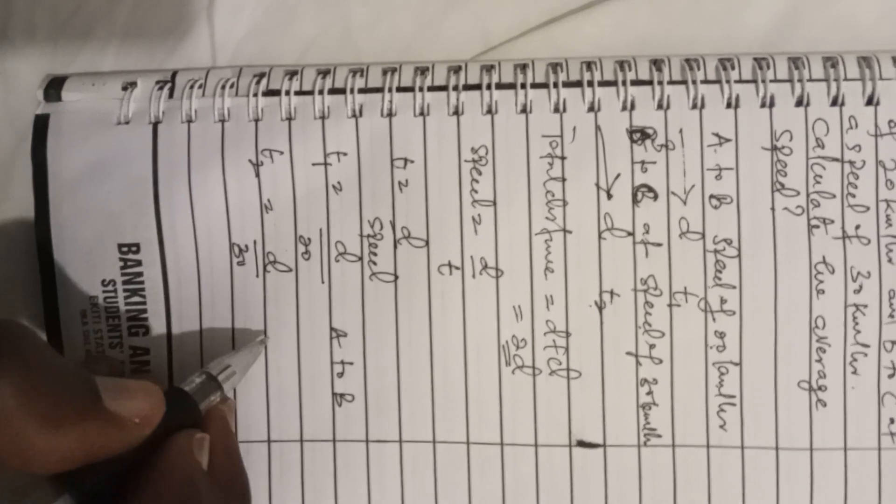So t1 for A to B, where the speed is 20 km/h, equals d over 20. And t2 for B to C, where the speed is 30 km/h, equals d over 30.